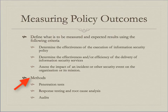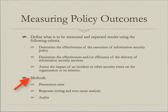The methods of ensuring policy outcomes are penetration tests, response testing and root cause analysis, and audits. Response testing and root cause analysis is the process of finding the main cause of any security incident and mitigating it. Root cause analysis is necessary after every incident — it applies to both missed controls and to how the organization can respond better in the future.